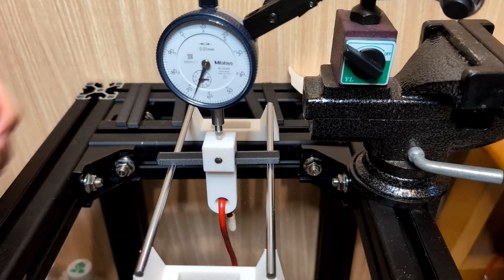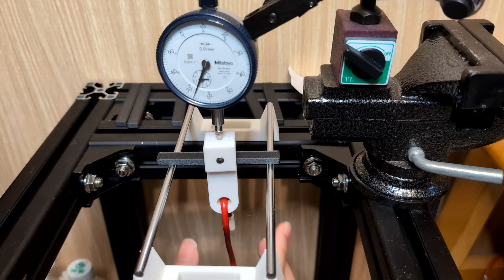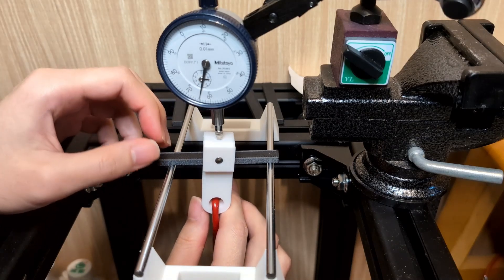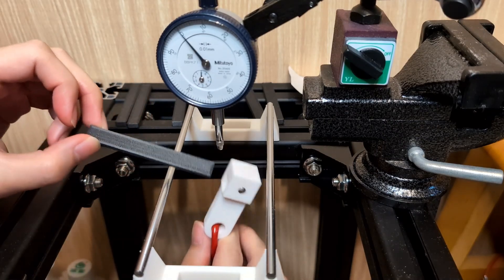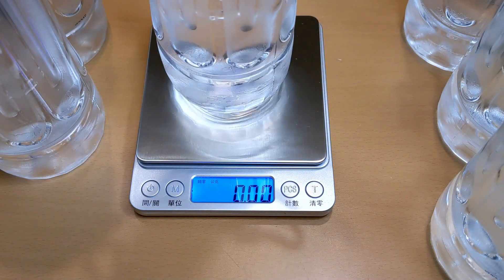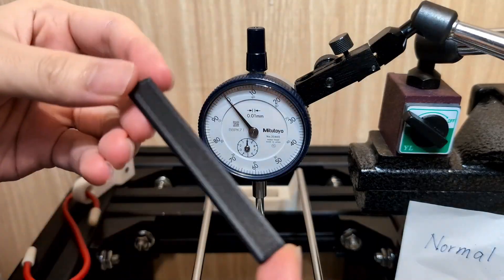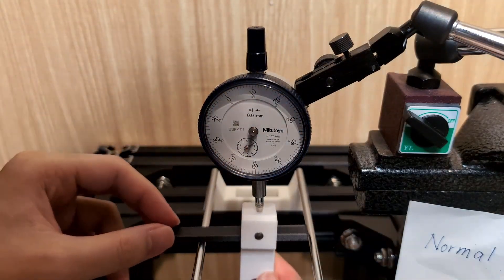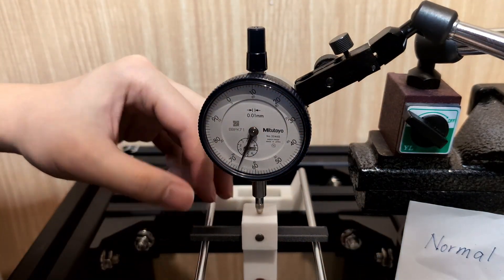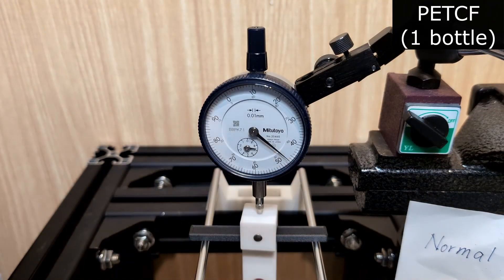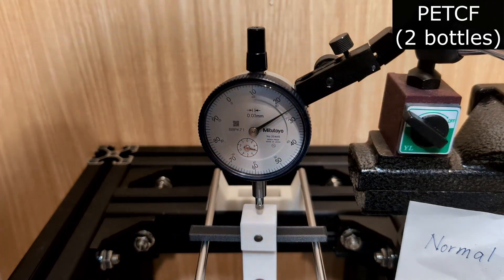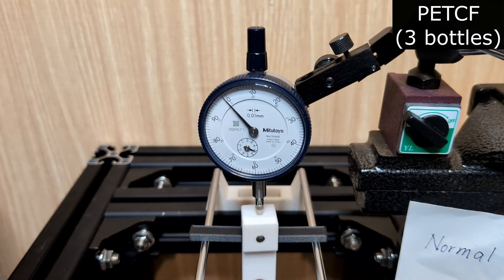This experiment is a modified version of the ISO 178 standard test. I prepared six 500g bottles of water. First, I used a dial indicator to take a baseline reading without load. Then I recorded the measurements after adding each new bottle to the center of the specimen.